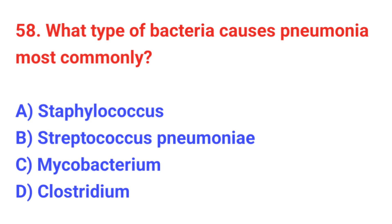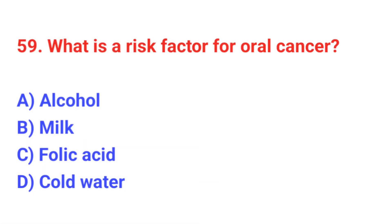Question number 58: What type of bacteria causes pneumonia most commonly? The correct answer is B: Streptococcus pneumoniae. Question number 59: What is a risk factor for oral cancer? The correct answer is A: Alcohol.